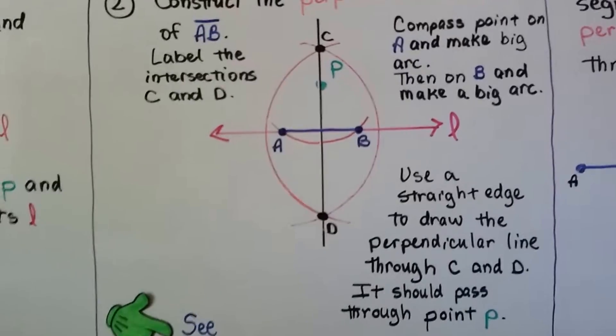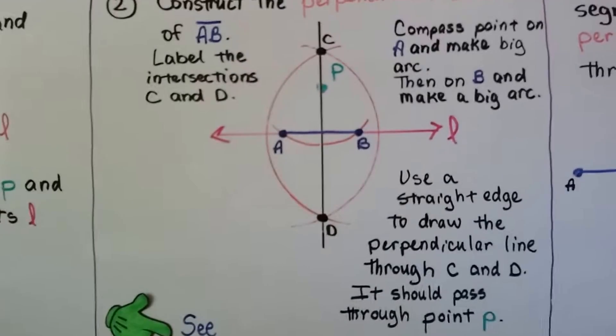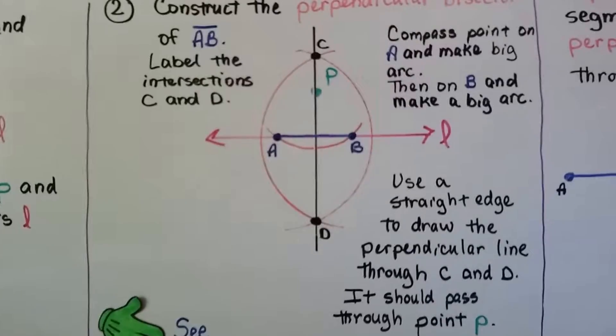...we use a straight edge to draw the perpendicular line through those intersections or through C and D and it should pass through point P.